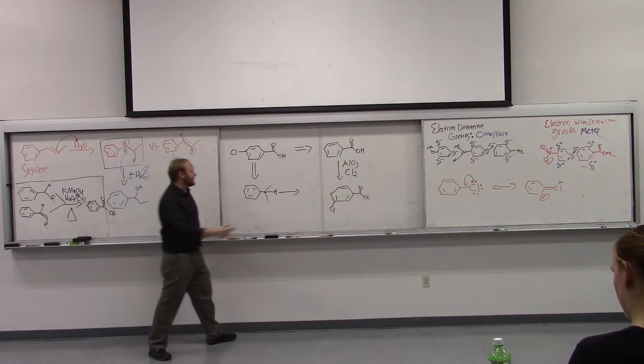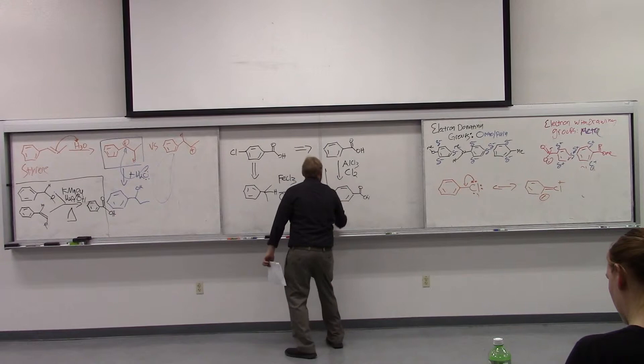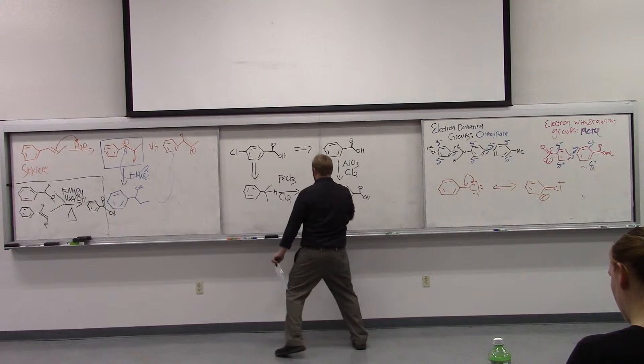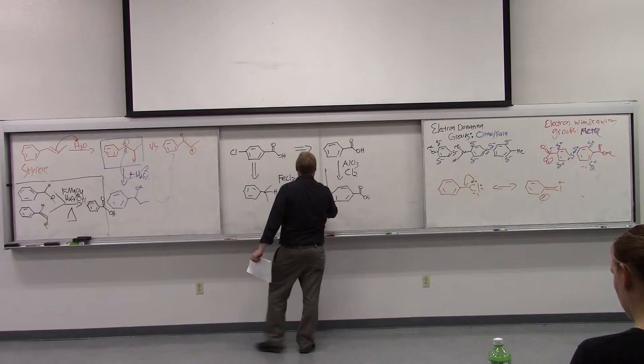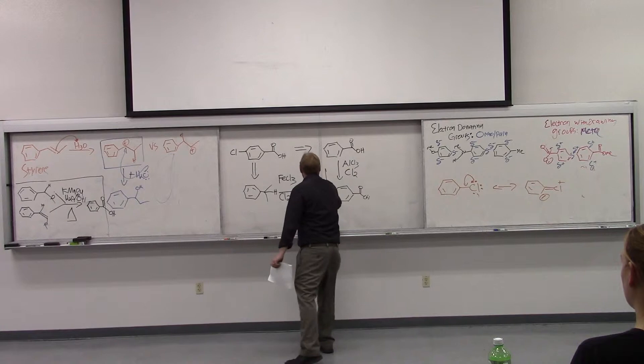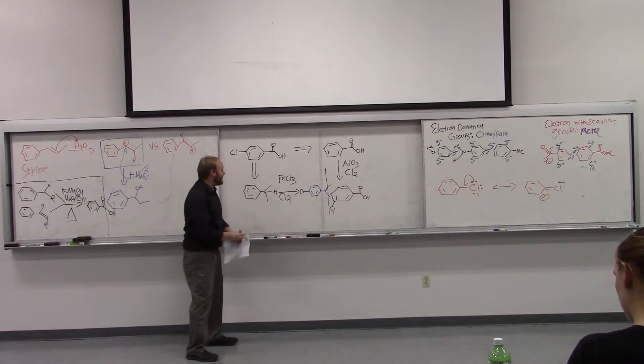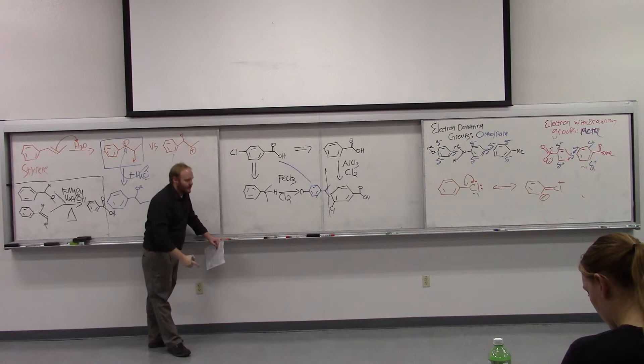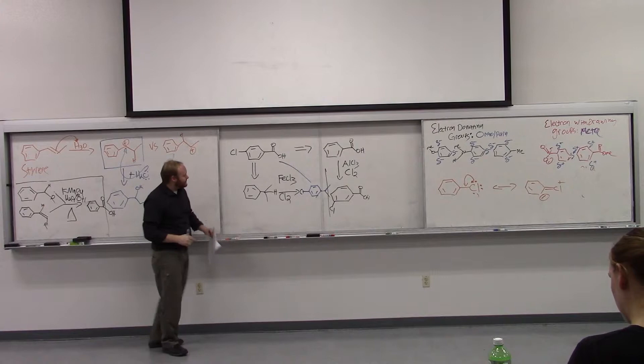So we can start with this. We can then do our chlorination. So Lewis acid, either AlCl3 or FeCl3. And then throw in our Cl2. Let me do another color for this product so it's easier to see. So we just have our electronically and sterically directed para chlorination using standard conditions.